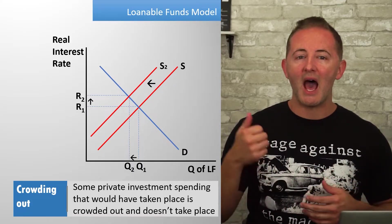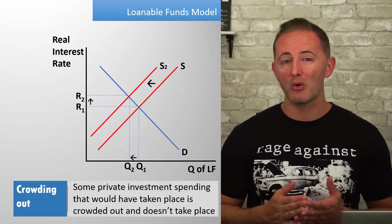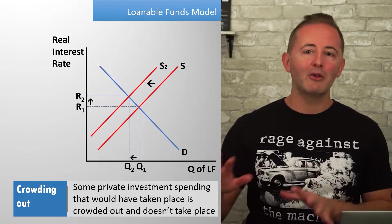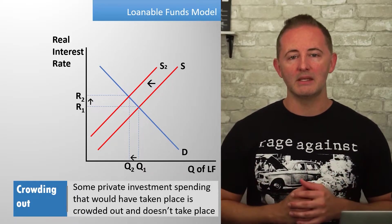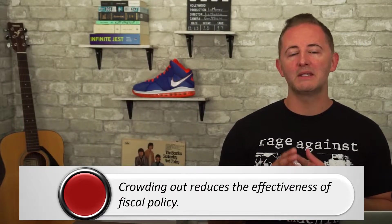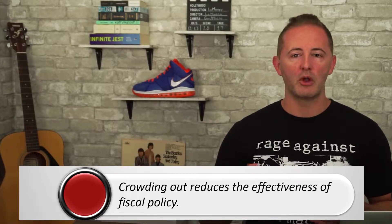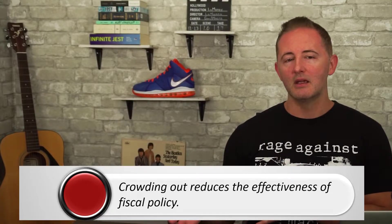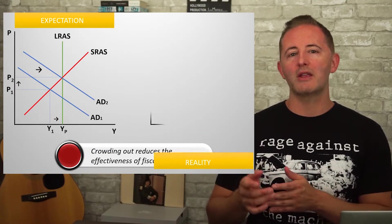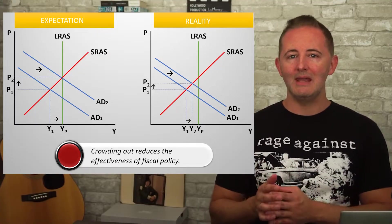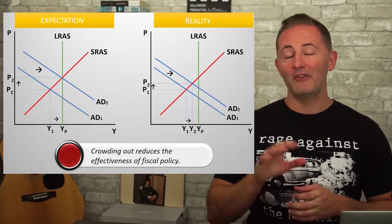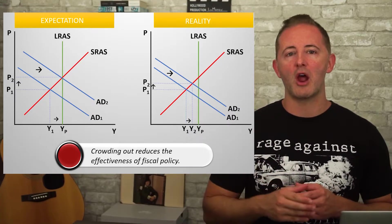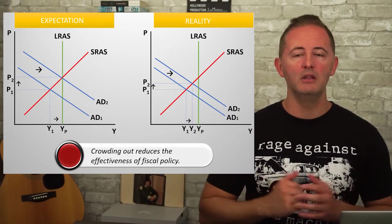We primarily focus on how investment spending is affected. When interest rates are forced higher as a result of increased government borrowing, some private investment spending that would have taken place is now crowded out and doesn't take place. As a result, crowding out makes expansionary fiscal policy less effective than it would otherwise be. The goal is to shift AD to the right, but since investment spending decreases, the crowding out causes a smaller than intended shift of the AD curve — and depending on sensitivity to higher real interest rates, it's possible the crowding out could offset the entire increase in AD.